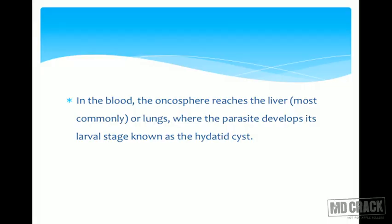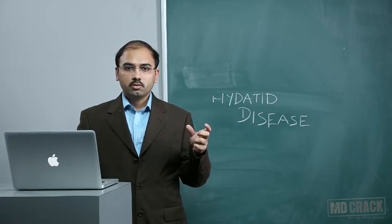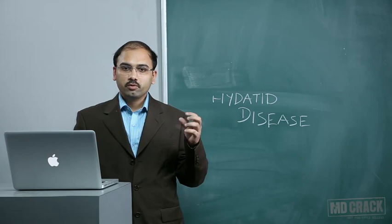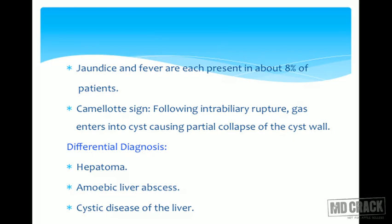In the blood, the oncosphere reaches the liver, which is the most common organ, or it may reach the lungs, where the parasite develops its larval stage known as a hydatid cyst. The clinical presentation is largely asymptomatic, but once it grows in the liver it starts producing symptoms, which may take three weeks to three years for first presentation. The most common presenting symptoms are abdominal pain, dyspepsia, and vomiting. The most frequent sign is hepatomegaly. Jaundice and fever are present in about 8% of patients.